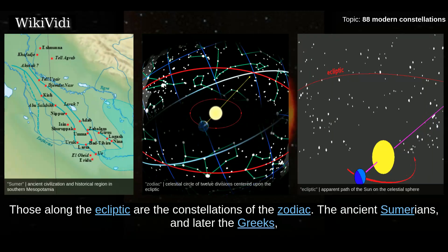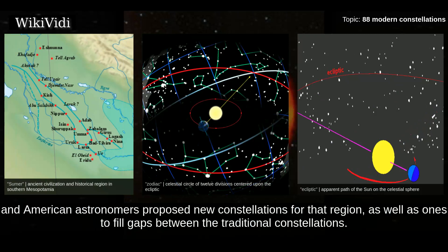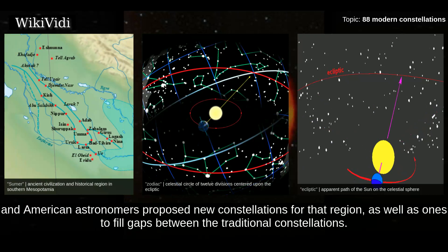Those along the ecliptic are the constellations of the Zodiac. The ancient Sumerians, and later the Greeks, established most of the northern constellations in international use today. When explorers mapped the stars of the southern skies, European and American astronomers proposed new constellations for that region, as well as ones to fill gaps between the traditional constellations.